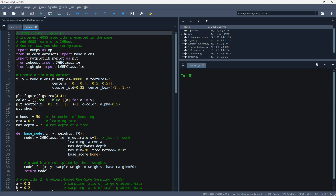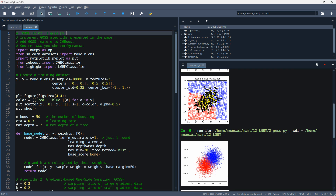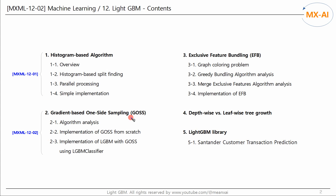So far, we have looked at gradient-based one-side sampling through a simple example. In the next video, we will look at the exclusive feature bundling, EFB algorithm.